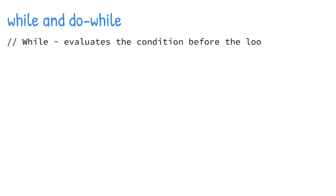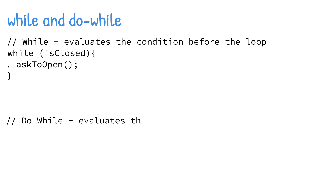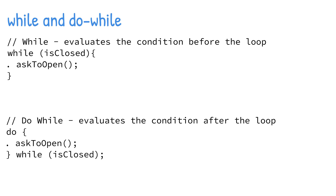Both the while and do-while loops evaluate a condition and continue to loop as long as the condition returns true. The while loop evaluates the condition before the loop is executed. The do-while loop evaluates the condition after the loop is executed at least once. Let's take a look at two examples showing how to use the while and do-while loops.